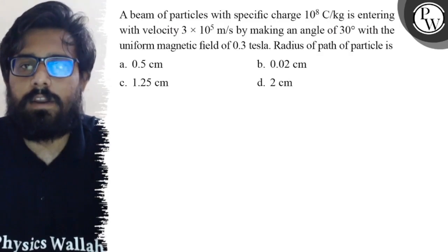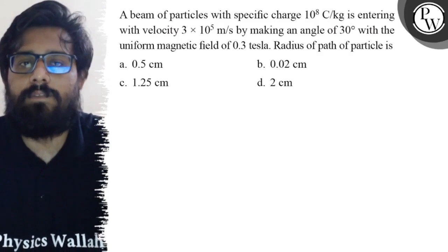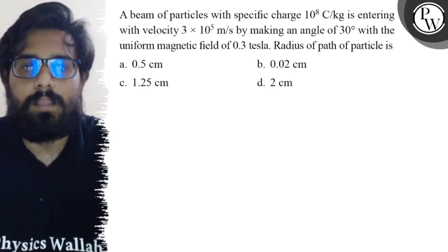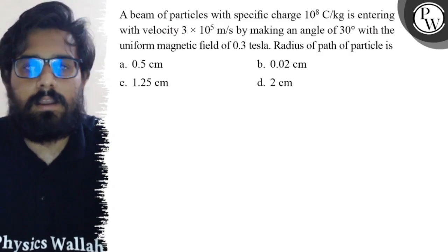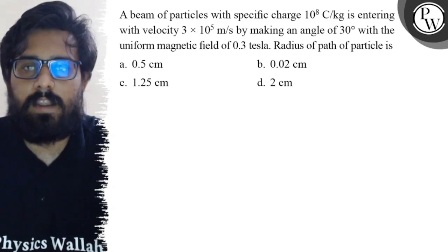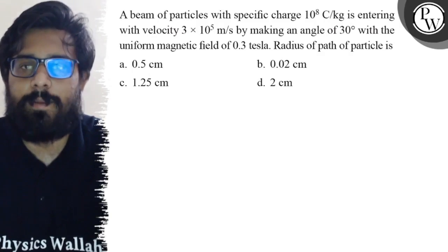By making an angle of 30 degrees with the uniform magnetic field of 0.3 tesla, the radius of the path of particle is: first option is 0.5 centimeter, second option is 0.02 centimeter, third option is 1.25 centimeter, and the fourth option is 2 centimeter.